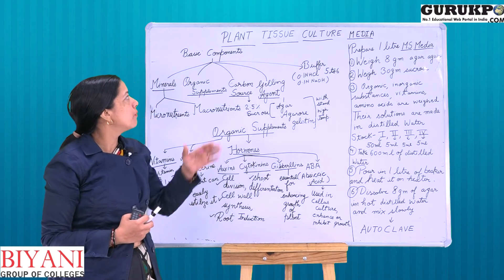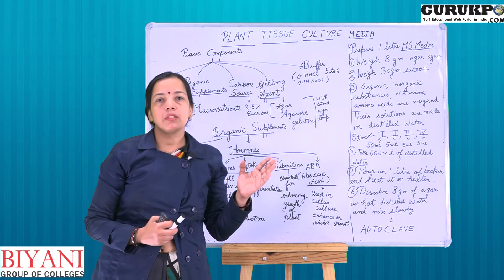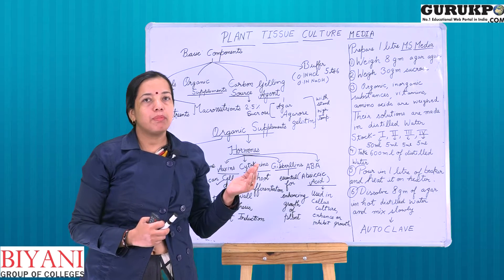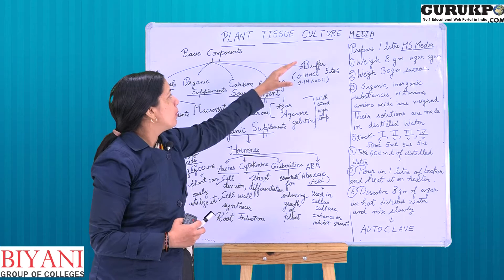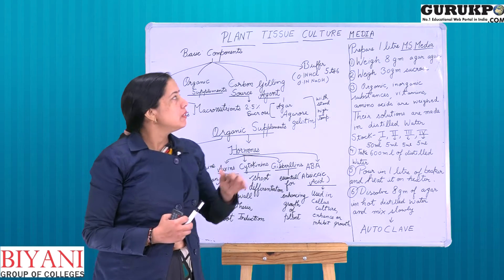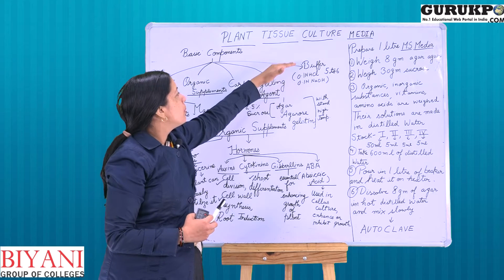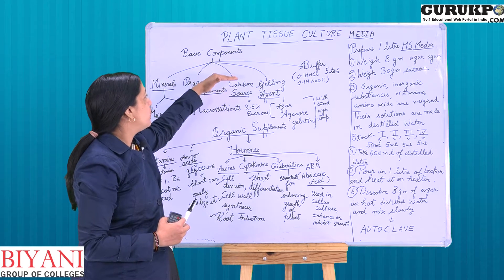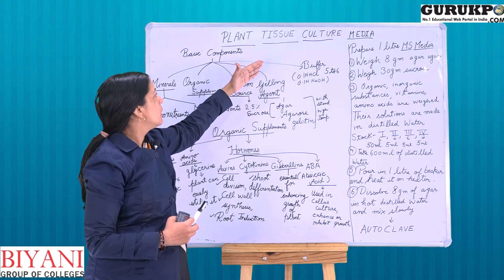In my previous lecture, I told you about plant tissue culture and its requirements. Plant tissue culture requires two major things: a proper media and sterile conditions. In this lecture, we will discuss the media — how to prepare it and what components are required for plant tissue culture.